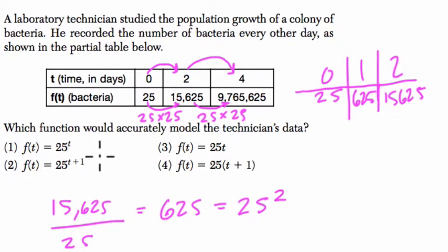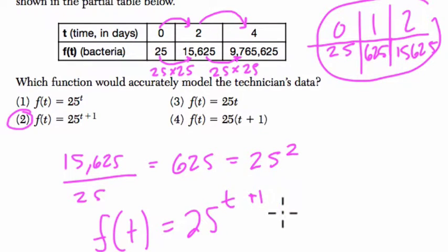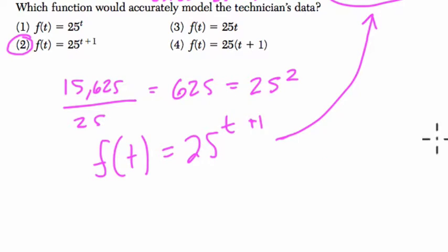Now, which of these equations actually would give us these results? You don't need the table I gave. You could test this out in the original table. But the only one that works for me is choice two, when f of t is 25 to the t plus 1 power. So how do I test this? Well, if I look at my table up here, let's plug in these x's, 0, 1, and 2. If this equation is correct, I should get 25, 625, and then 15,625. And I do.